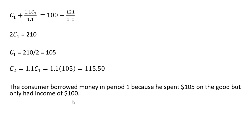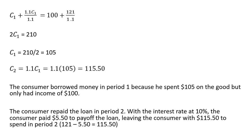In this problem, the consumer borrowed money in period 1 because he spent $105 on the good but only had $100 of income — income in period 1 was specified as $100. So the consumer borrowed $5. With the interest rate at 10%, the consumer repaid $5.50 in period 2, leaving $115.50 to spend. So with a $5 loan at 10% interest, repaying the loan costs $5.50, leaving only $115.50 worth of the good to purchase in period 2.